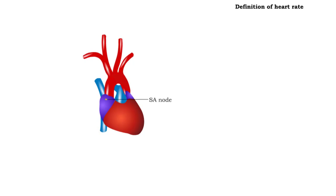The sinoatrial node normally initiates 60 to 100 heartbeats per minute. A normal resting heart rate is about 75 beats per minute.